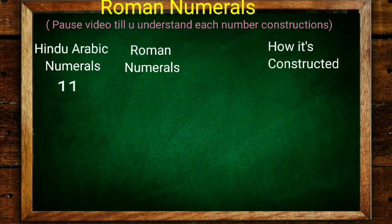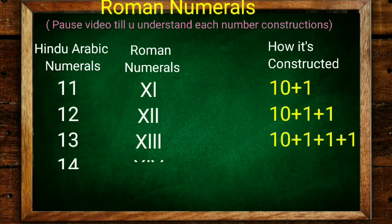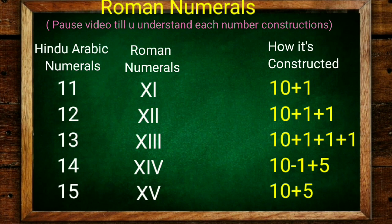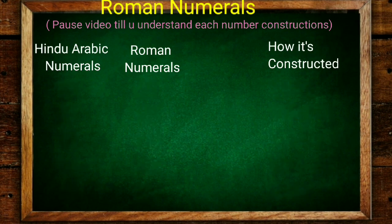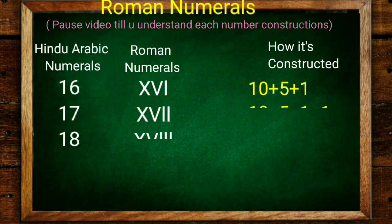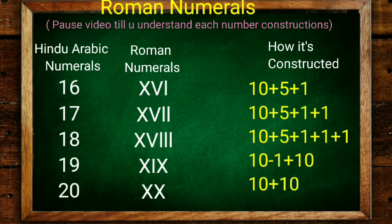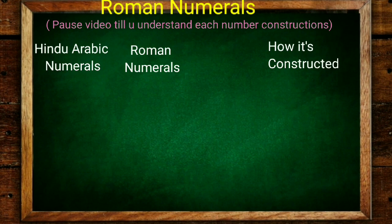Now 11 is X plus 1 (10 plus 1), 12 is 10 plus 2, 13 is 10 plus 3. 14 is special: 10 minus 1 is 9, plus 5 is 14. 10 plus 5 is 15. Hope you are understanding. 16 is 10 plus 5 plus 1, 17 is 10 plus 5 plus 2, 18 is 10 plus 5 plus 3. 19 is 10 minus 1 is 9 plus 10. 20 is 10 plus 10.